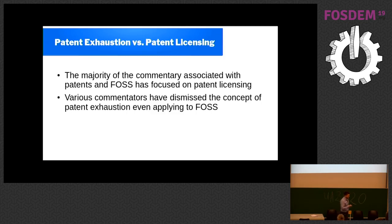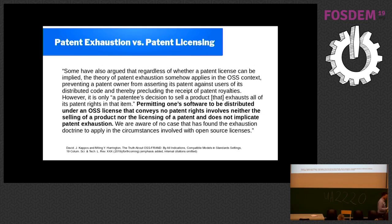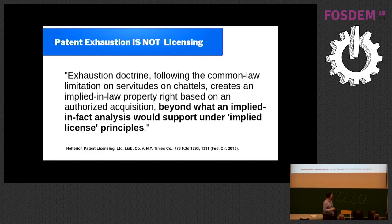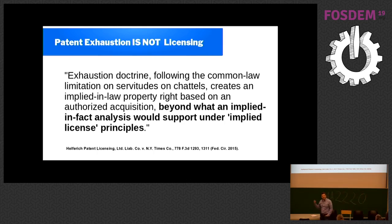People will say that patent exhaustion doesn't really exist. This is a quote from an article published late last year — I've bolded the quote: 'Permitting software to be distributed under an OSS license that conveys no patent rights involves neither the selling of a product nor the licensing of a patent, and does not implicate patent exhaustion.' With all due respect, this is a pile of crap. I'm going to go through and hit you with lots and lots of case law — in each case I'm quoting directly from the appropriate cases. But first, for those not intimately familiar with patent law, what's the difference between a patent license and patent exhaustion?